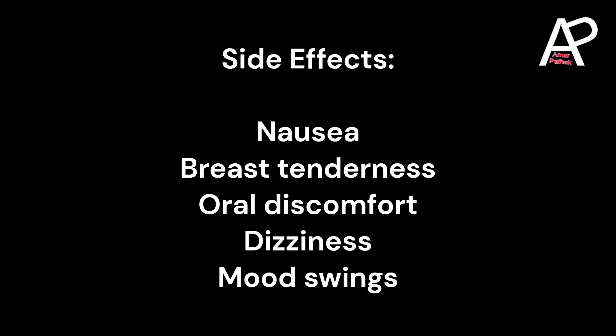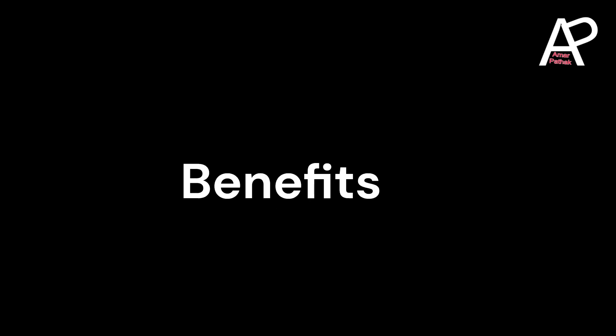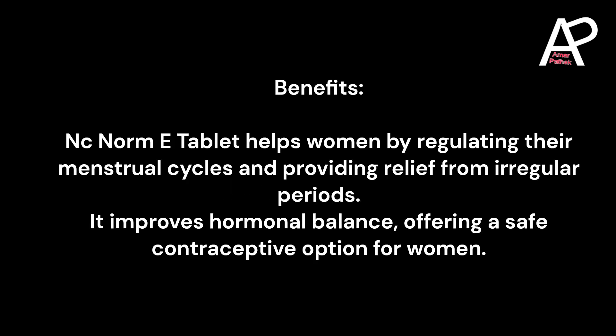Additional side effects include breast tenderness, oral discomfort, dizziness, and mood swings. NC-Norm E-Tablet helps women by regulating their menstrual cycles, providing relief from irregular periods, improving hormonal balance, and offering a safe contraceptive option for women.